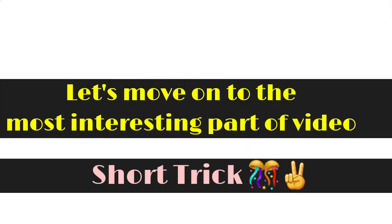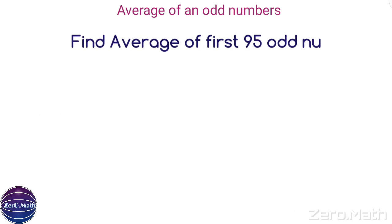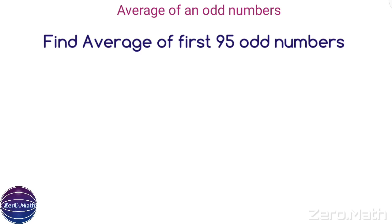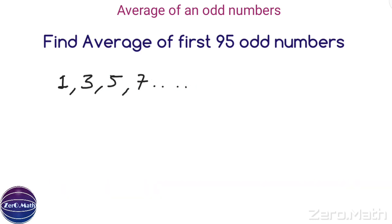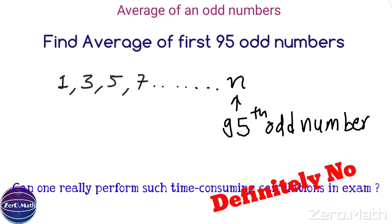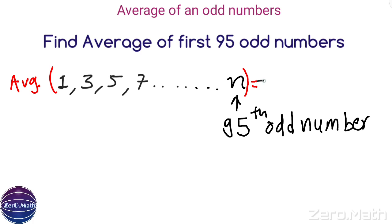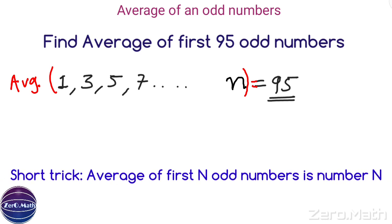Now let us move to the most interesting part — short tricks for average problems. Find the average of the first 95 odd numbers. Odd numbers are numbers not divisible by 2, for example 1, 3, 5, 7, and so on. The answer of this sum is simply 95. The rule to remember is: the average of the first N odd numbers is always N. I will prove this with a simple example.